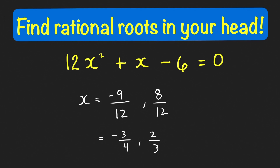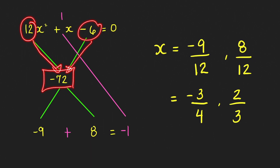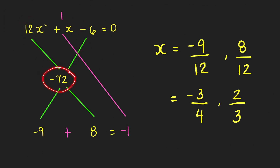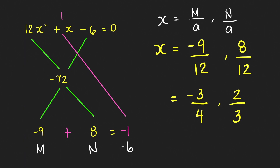Let me show the step-by-step process. We're given this equation. The first step is to multiply a and c, and we get negative 72. Then we think of factors of this product whose sum is the negative of the coefficient of x — that is negative b, equal to negative 1. After finding factors m and n, the solutions are m over the coefficient of x squared and n over that coefficient. So we get negative 9 over 12 and 8 over 12, equal to negative 3 fourths and 2 thirds.